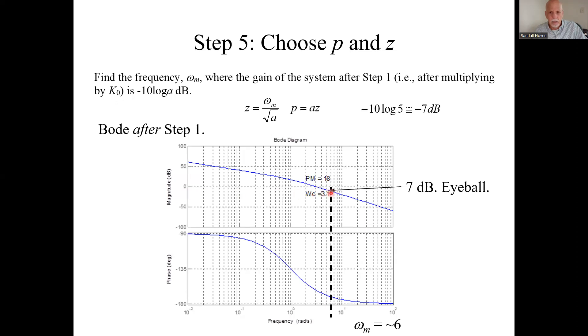But we'll say it's about there. And this little line is where the blue line would meet at 7 dB down. That's about six radians. That's our omega sub m. This, by the way, is where my students had the most trouble. They just wanted to plug in a formula to come up with a number. You can't do that. You need to read the Bode plot.